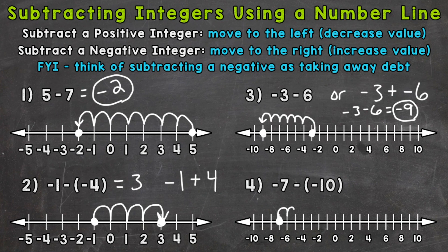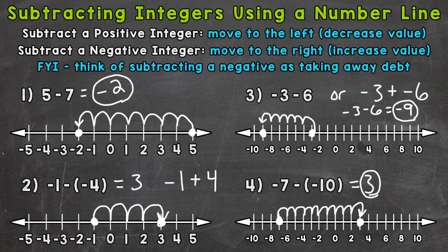We need to move ten spots to the right. One, two, three, four, five, six, seven, eight, nine, and ten. So we end up at positive three — this equals positive three. Remember, we can think of subtracting integers as adding the opposite. So we can think of this problem as negative seven plus a positive ten.